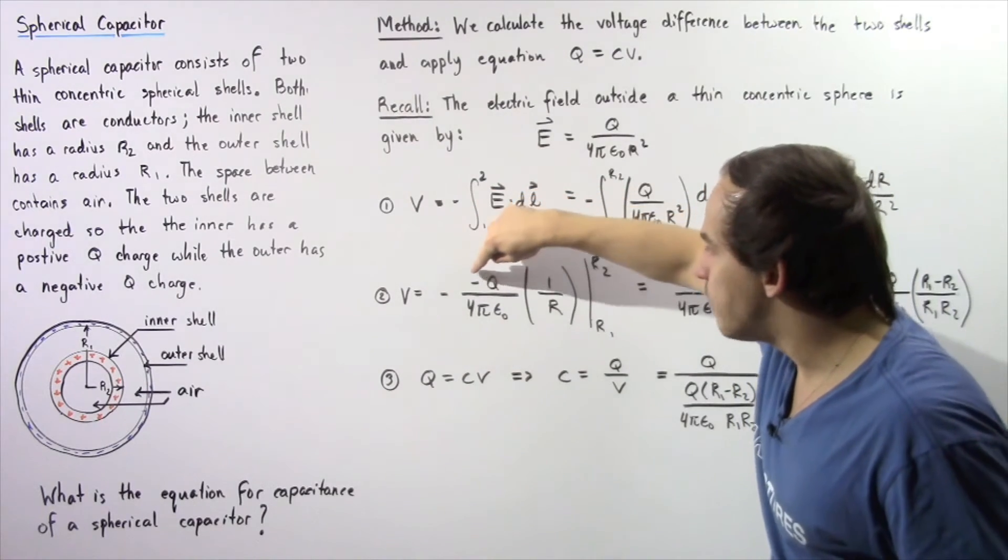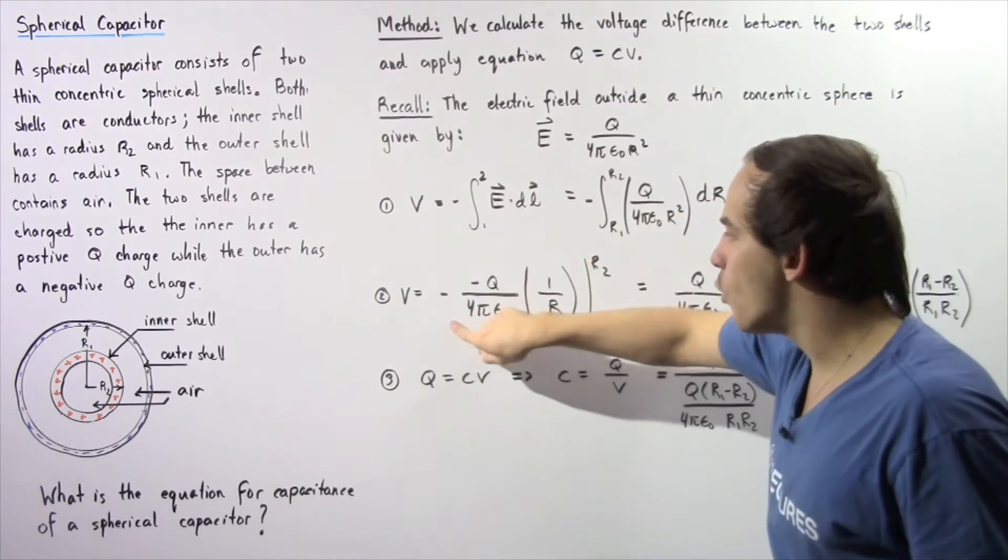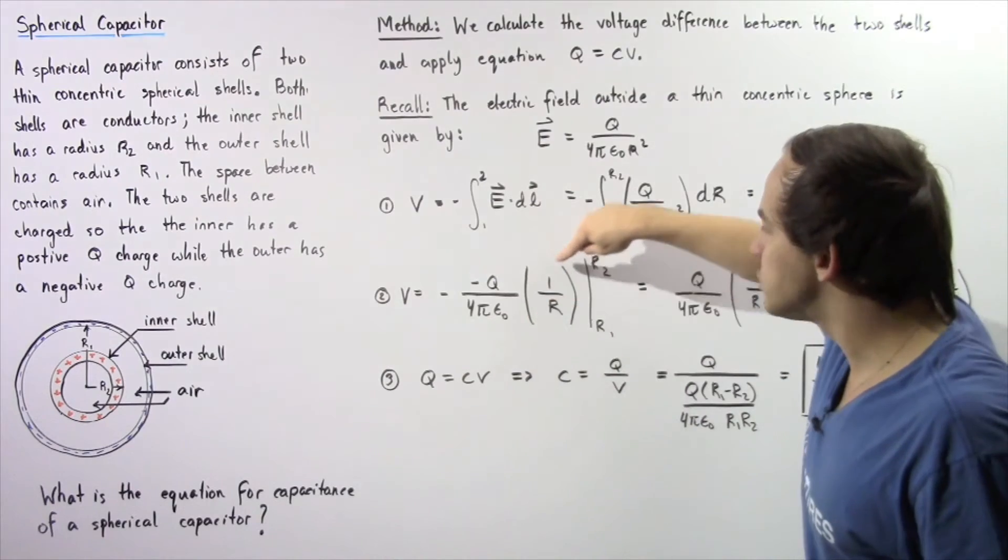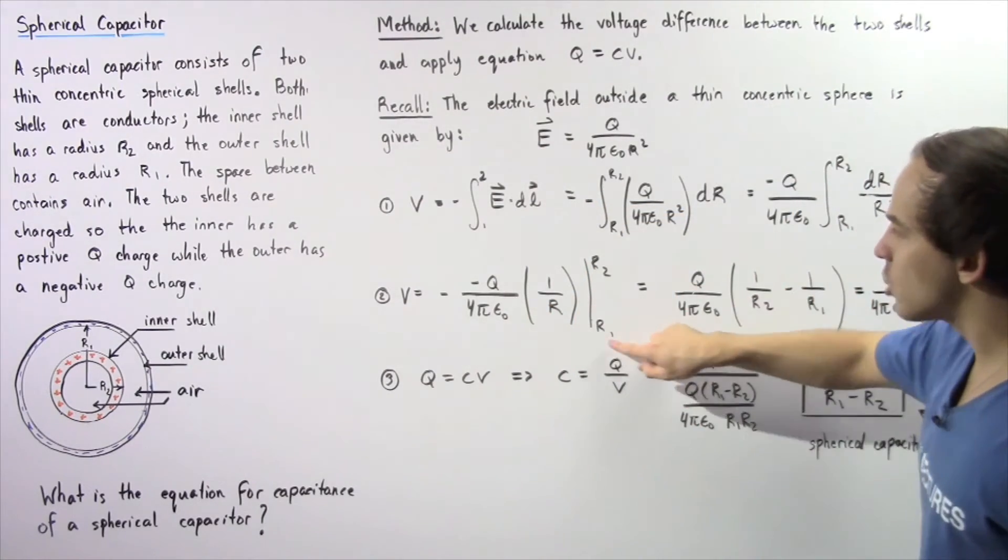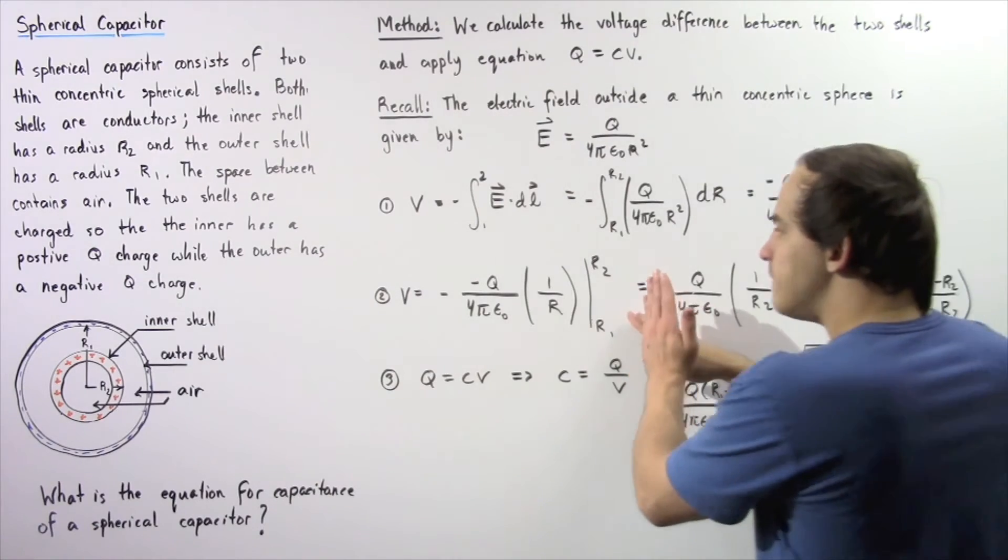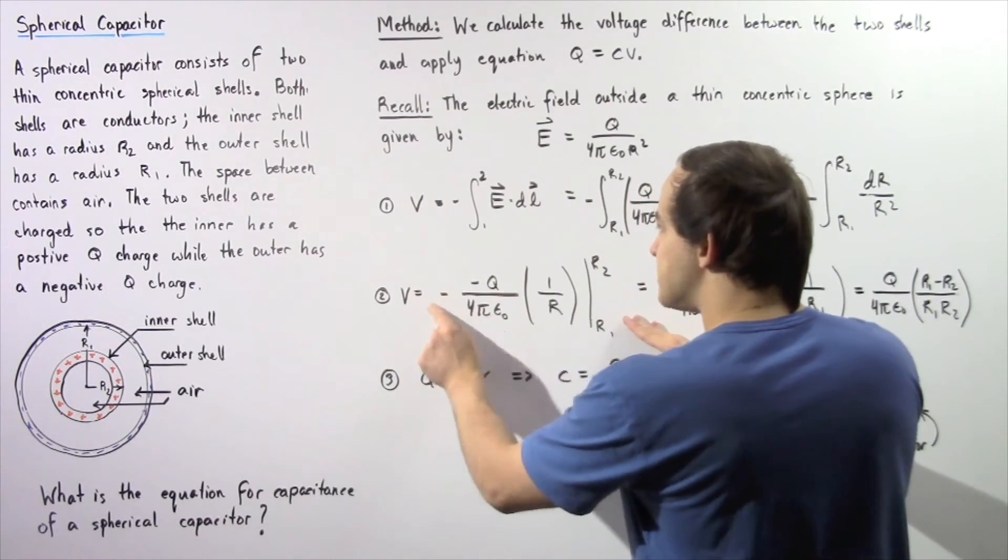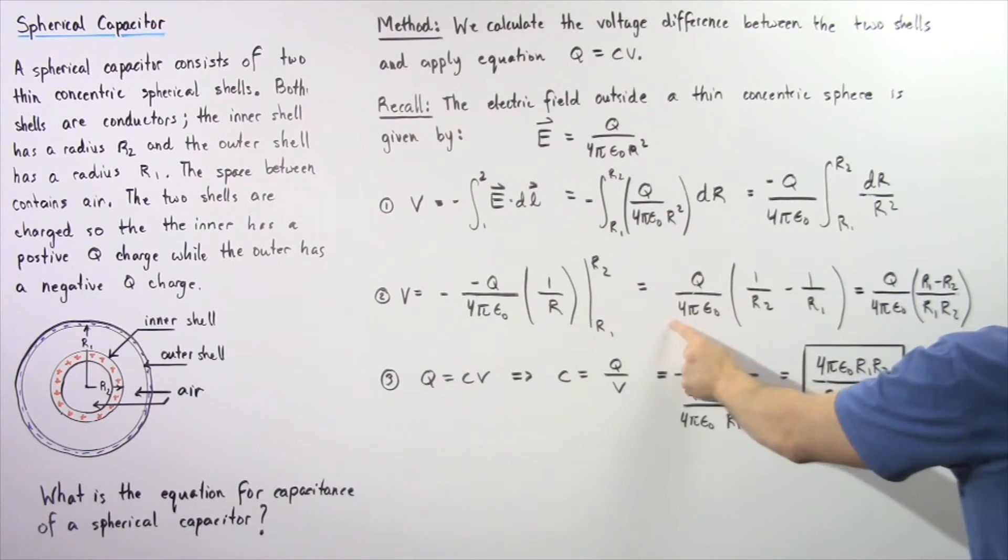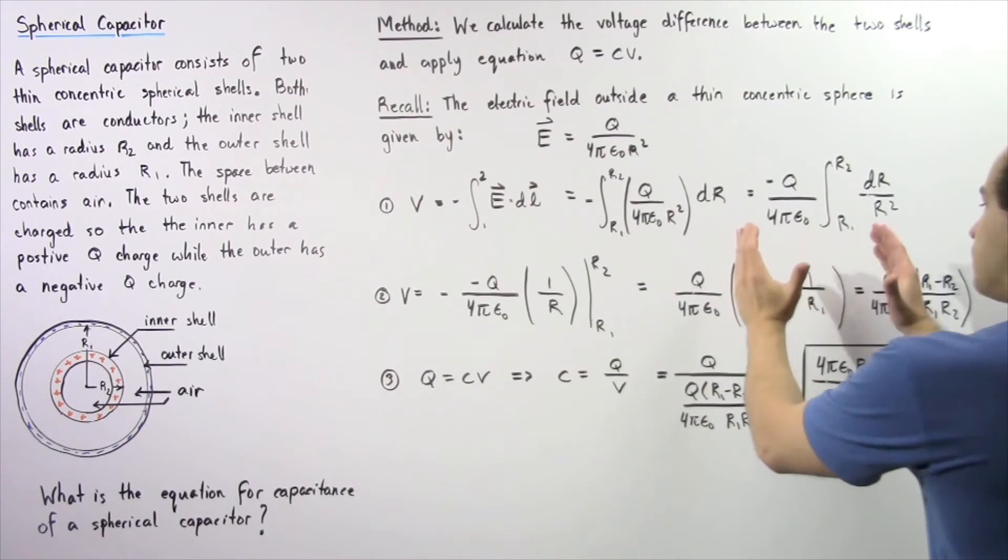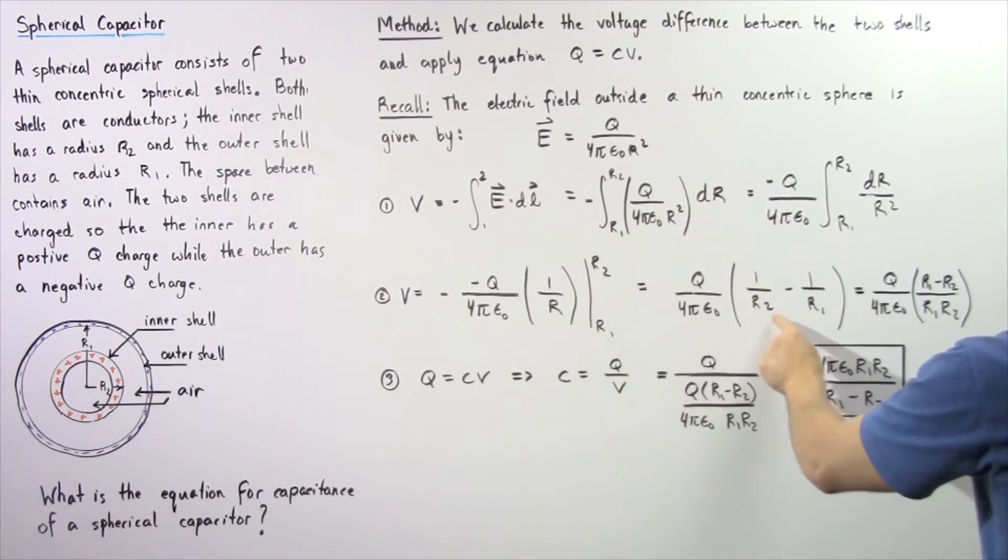Negative 1 multiplied by negative Q divided by 4π epsilon naught multiplied by 1 divided by r, evaluated from r1 to r2. If we evaluate this, the negatives cancel, leaving Q divided by 4π epsilon naught multiplied by 1/r2 minus 1/r1.